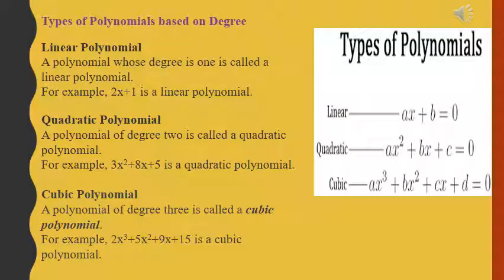Now we see the types of polynomials based on degree, meaning the power of the variable. If a polynomial has degree 1, it is a linear polynomial. For example: 2x plus 1, 5x minus 2, etc.